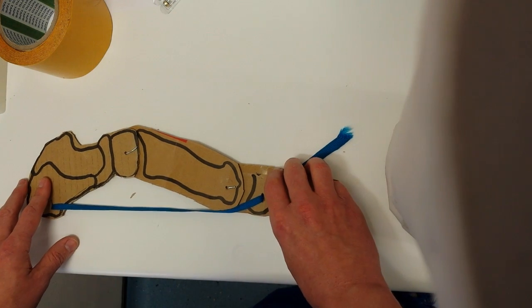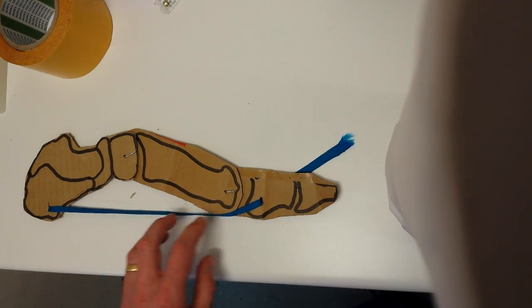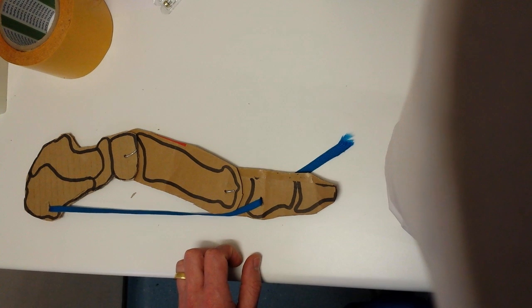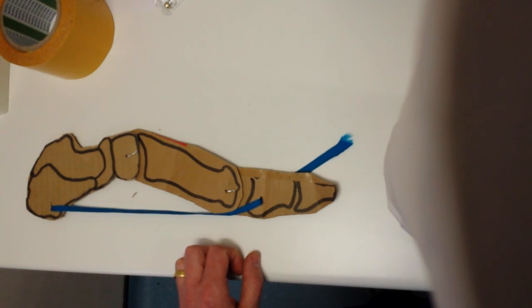You can test for this in non-weight bearing when the person is on the couch, when you try and dorsiflex the big toe there. You're looking normally for 60-odd degrees or thereabouts. If you can't get that, then there is structural hallux limitus. That's the slightly easier one.